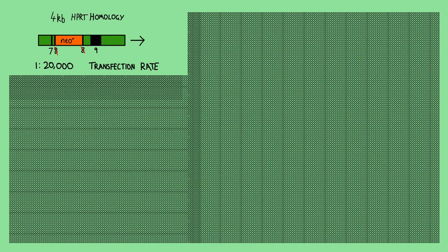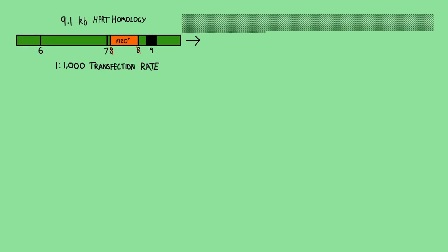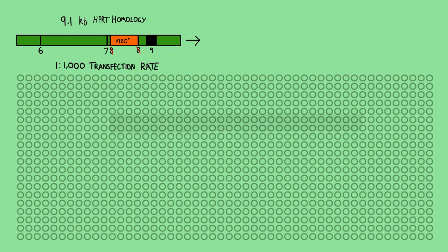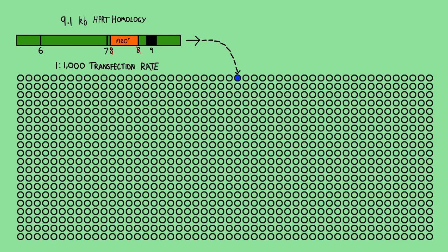This protocol is extremely sensitive to sequence homology, whereby doubling the amount of homology could increase transfection frequency by up to 20 times. A 4 kilobase vector had a transfection rate of 1 in 20,000, and increasing homology to 9.1 kilobases raised the transfection to 1 in 1,000.